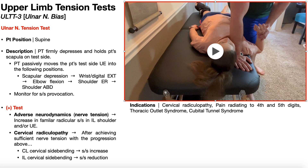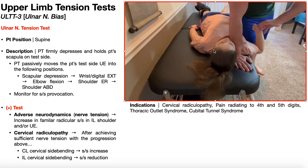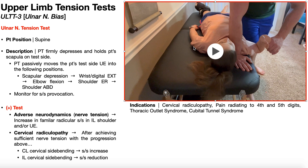Here I'm fixing the scapula in depression, preventing it from moving up. I've commanded her to make the OK sign — you can see her first and second digits together, and now digits 3, 4, and 5 are exposed. The first thing I do is put the wrist and digits 3, 4, and 5 into extension. I just grab onto those fingers, and there they are in extension along with the wrist.